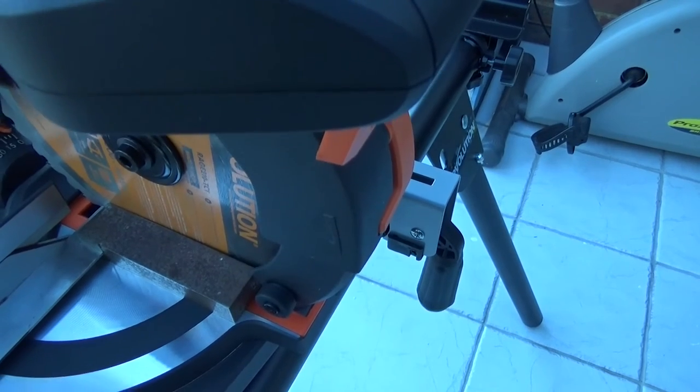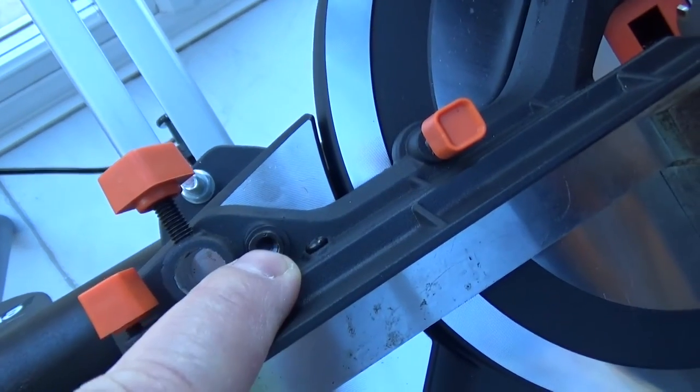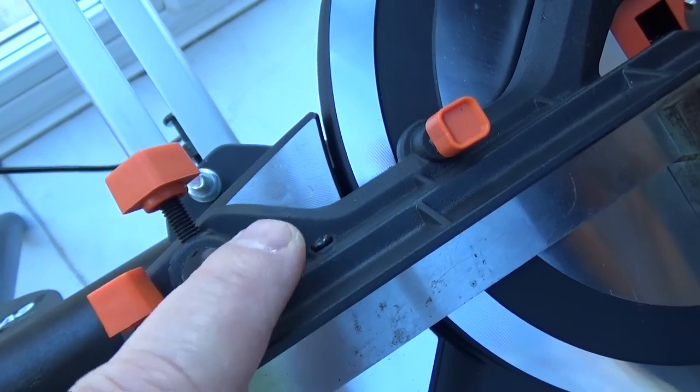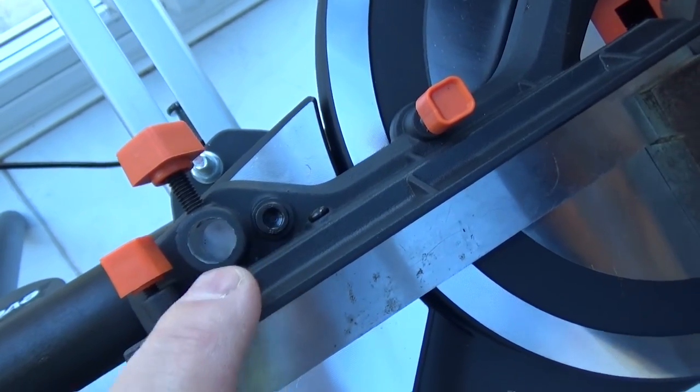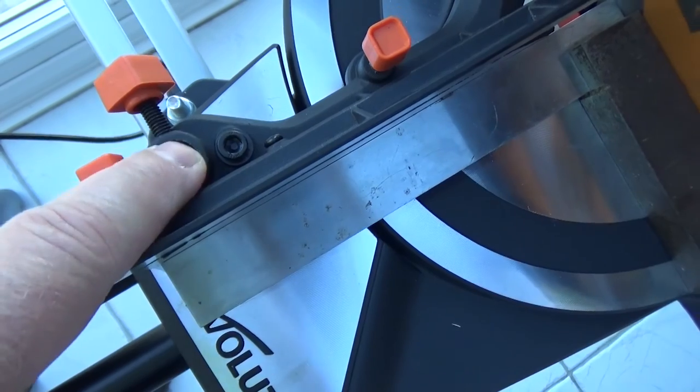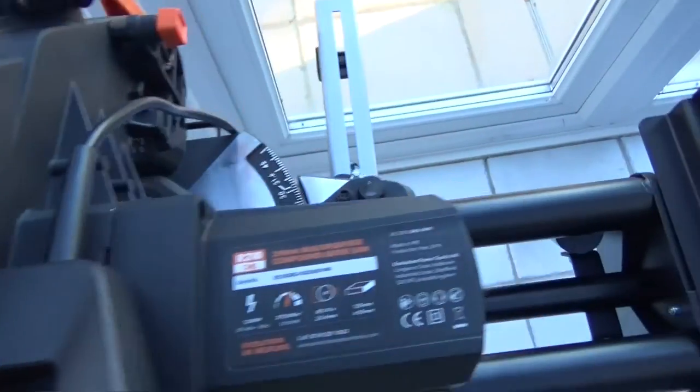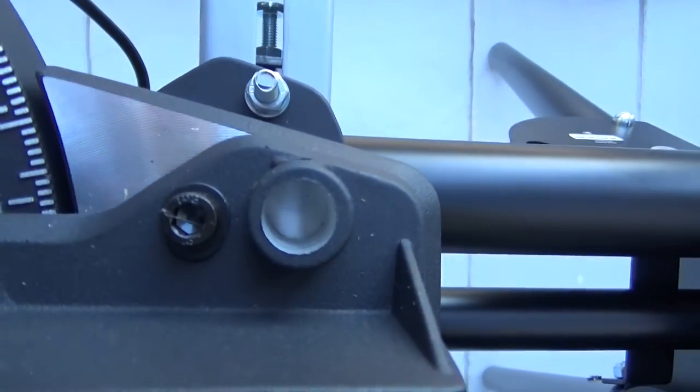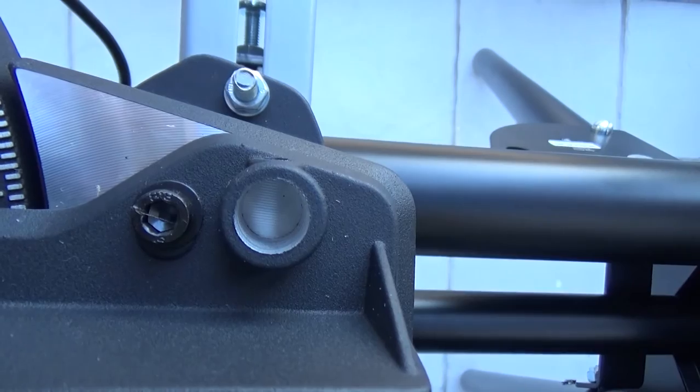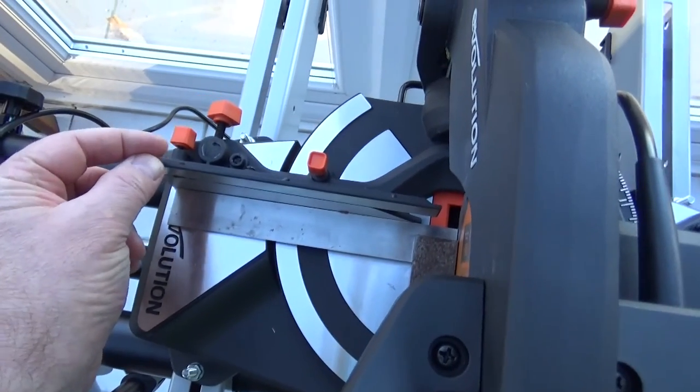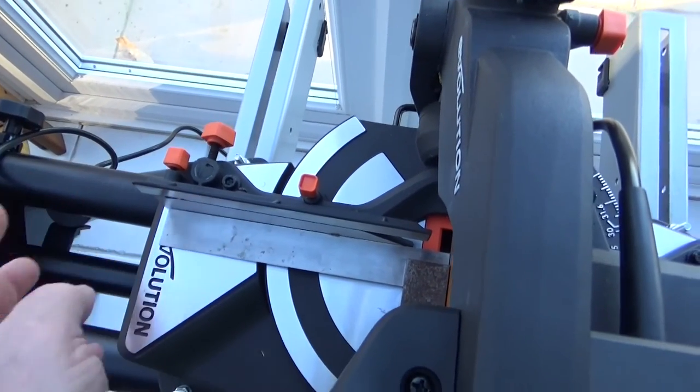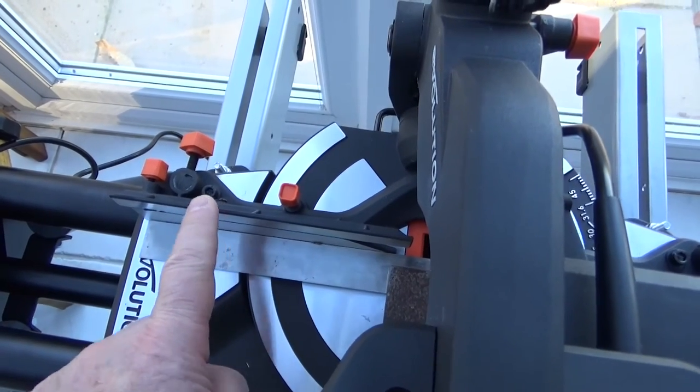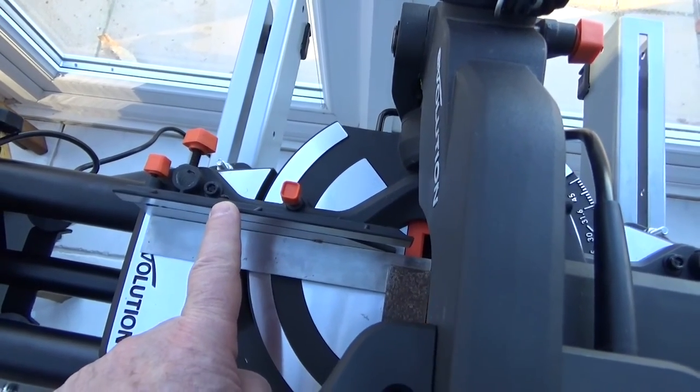To adjust this, there are two set screws at the back. There's one on the left hand side next to where the hold down goes, and one on the right hand side. You can see that's slightly elongated which allows you to slide the table backwards and forwards on either side. These both need to be slackened off with a 5mm allen key.